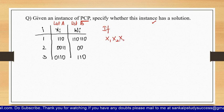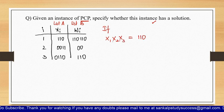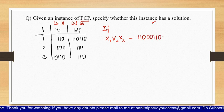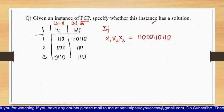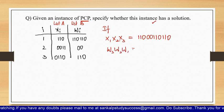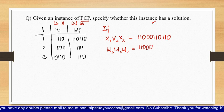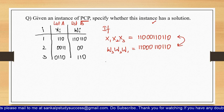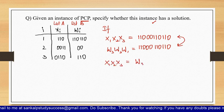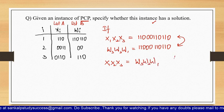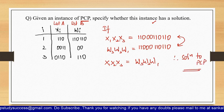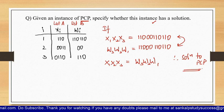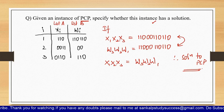Let us combine x1, x2, and x3: x1 is '110', x2 is '0011', and x3 is '0110'. Now taking w3, w2, and w1: w3 is '110', w2 is '00', and w1 is '110110'. Observing both, you get the same strings. So x1·x2·x3 equals w3·w2·w1, which means there is a solution to the Post Correspondence Problem.